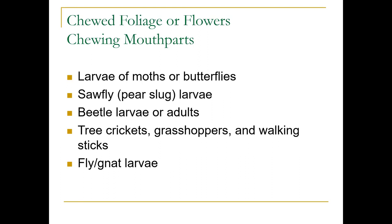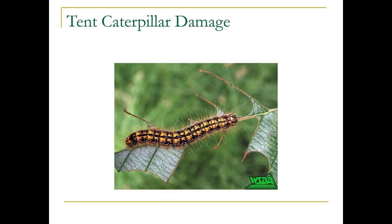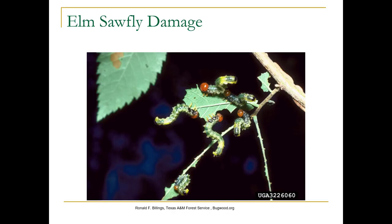Fly or gnat larvae also have chewing mouthparts. Here's some tent caterpillar damage — note the white dot on the head of this caterpillar. That's actually an egg from a tachinid fly, and it's going to parasitize this caterpillar. It's a great natural enemy that naturally occurs in our area. Here's elm sawfly damage.